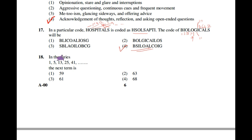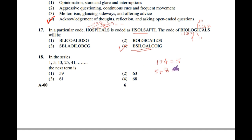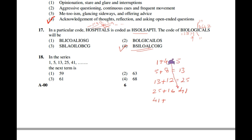Question number 18: In the series 1, 5, 13, 25, 41, what is the next term? By observing the series, the differences are 4, 8, 12, 16 — a table of 4. So the next difference is 20, meaning 41 + 20 = 61. The third option — 61 — is the correct answer.